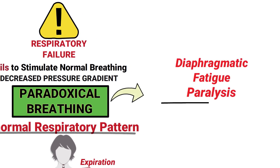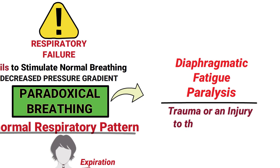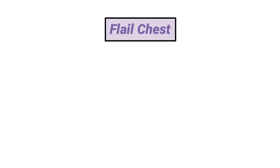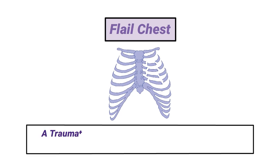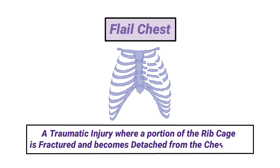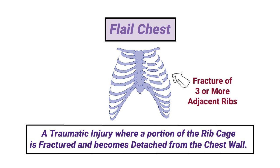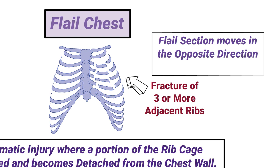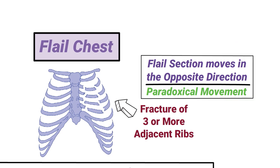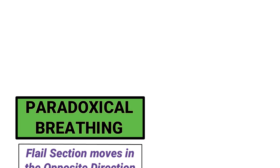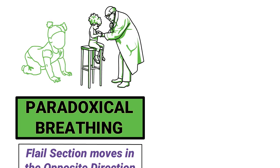Paradoxical breathing can result from diaphragmatic fatigue or paralysis, but it's most commonly associated with trauma or injury to the chest wall. One type of chest trauma is known as a flail chest — a traumatic injury where a portion of the rib cage is fractured and becomes detached from the chest wall, occurring when three or more adjacent ribs are fractured. The flail section moves in the opposite direction, which is known as paradoxical movement.